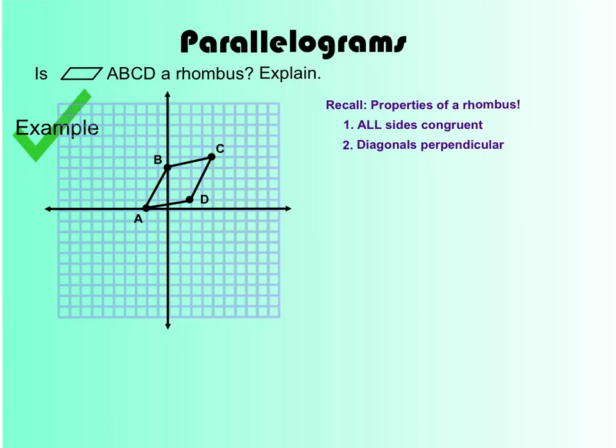So again, I'm going to find the coordinates of my points. I have negative 2, 0, 0, 4, 4, 5, and 2, 1. Now I'm going to go through and I'm going to find the lengths of all of those sides.